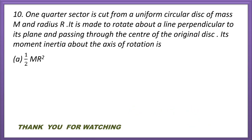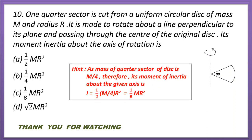Question 10. One quarter sector is cut from a uniform circular disc of mass M and radius R. It is made to rotate about a line perpendicular to its plane and passing through the center of the original disc. Its moment of inertia about the axis of rotation is: ½MR², ¼MR², ⅛MR², or √2·MR²? Mass of quarter sector = M/4, therefore its moment of inertia = ½·(M/4)·R² = MR²/8. The correct answer is option C. Thank you for watching this video; do not forget to like, share, and subscribe, and write your comment in the comment box.